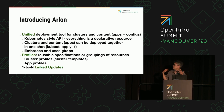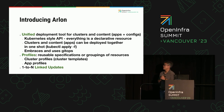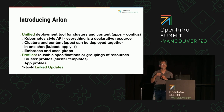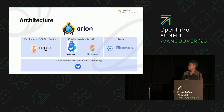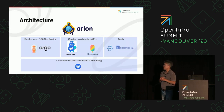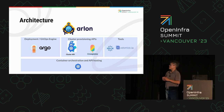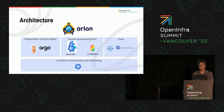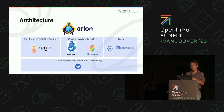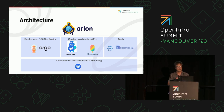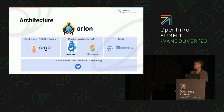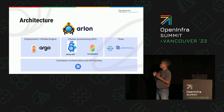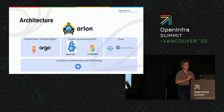Arlon doesn't try to reinvent the wheel. It rests on the shoulders of existing, well-known tools in the community. For manifest deployment, Arlon uses Argo CD. For expressing and orchestrating cluster provisioning, Arlon lets you choose between Cluster API manifests or Crossplane. Arlon also uses other well-known tools such as Kustomize and Helm.